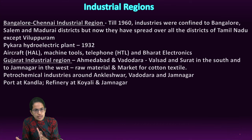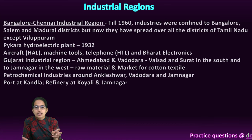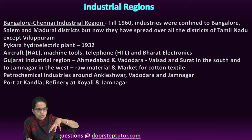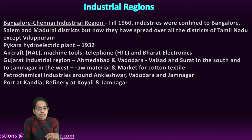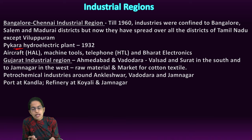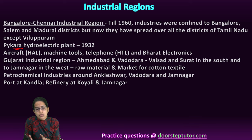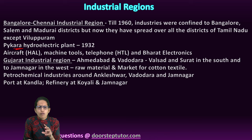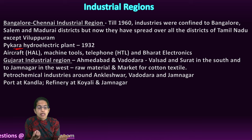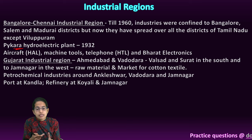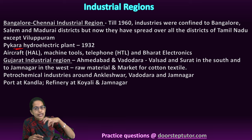The Bangalore-Chennai industrial region was mainly confined to Bangalore, Salem, and Madurai until the 1960s, after which the whole belt started developing. The most important hydroelectric plant here was the Pykara Hydroelectric Power Plant established in 1932. Industries that came in included textile, wagon, matchbox, leather goods, light industries, medical industries, aluminum, sugar, cement, glass, fertilizers, and paper. Major centers established were Hindustan Aeronautics Limited (HAL), Hindustan Machine Tools (HMT), Hindustan Telephone Lines, and Bharat Electronics.